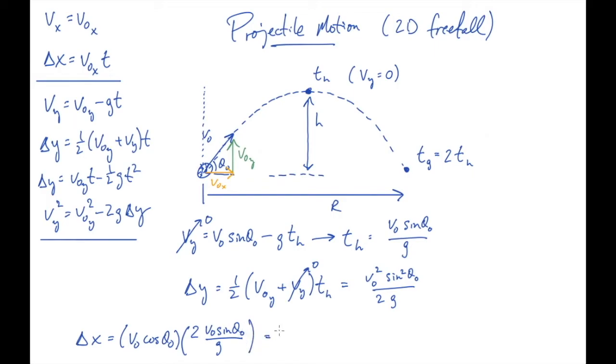Okay now I can use a trig identity here. 2 cosine theta naught sine theta naught is sine of 2 theta naught. And I have a v naught squared. So I end up with v naught squared sine of 2 theta naught over g. That's the horizontal range. That's the maximum distance sideways that a projectile goes if it is launched and returns to the same height.